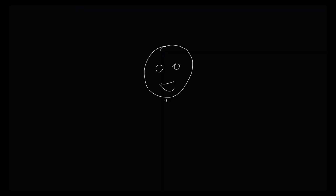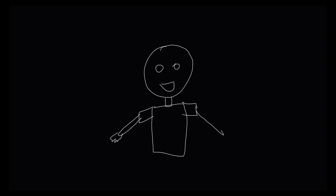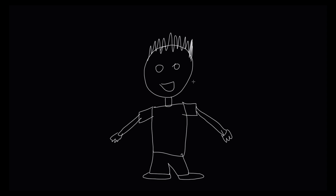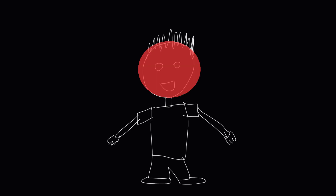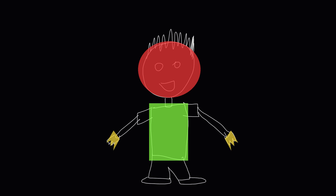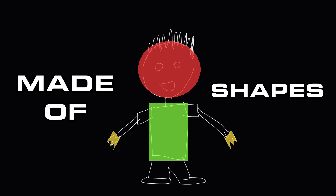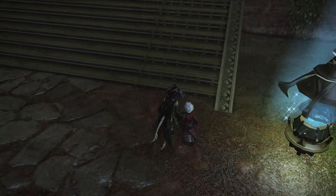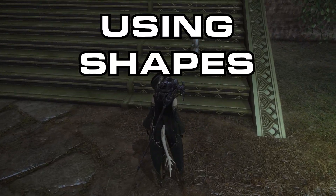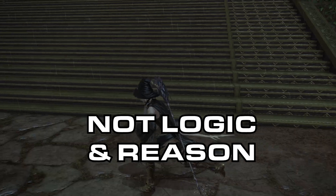If you ever drew when you were a kid, maybe your drawings looked like this one. This is because as kids, our logical brain is not as developed as adults, so we see things like circles, squares and triangles. Everything you see in the world is made of shapes. The ability of the artist is to communicate using shapes and not logic and reason.